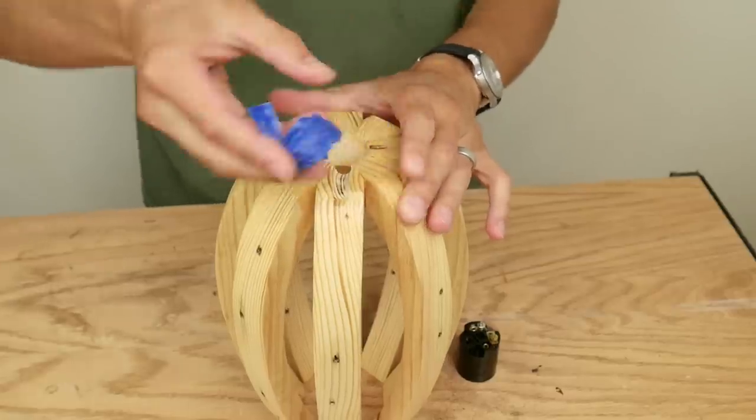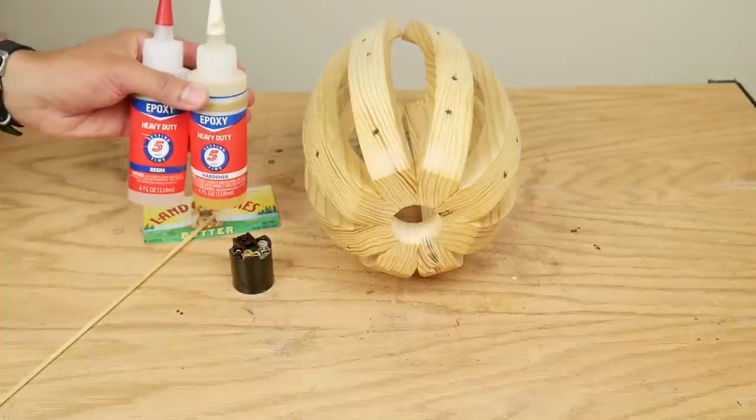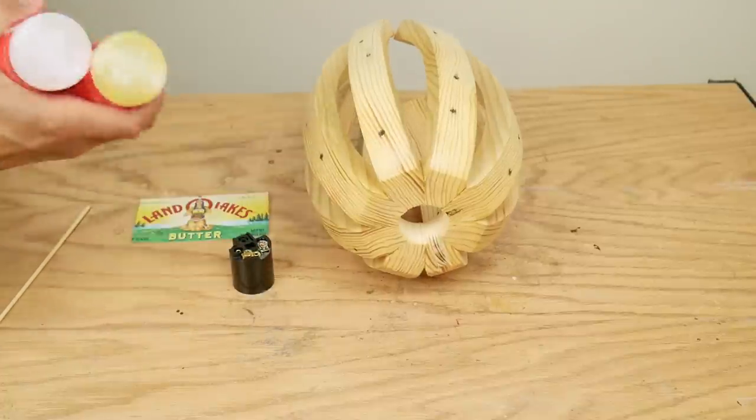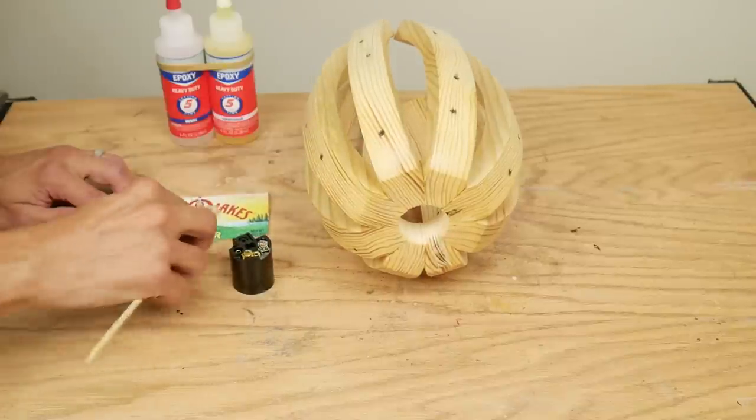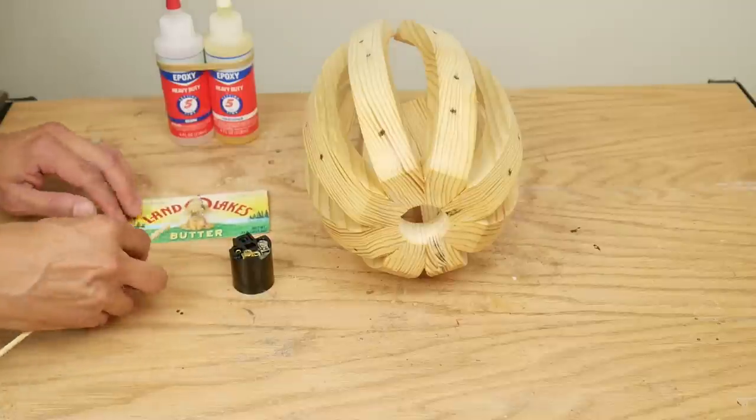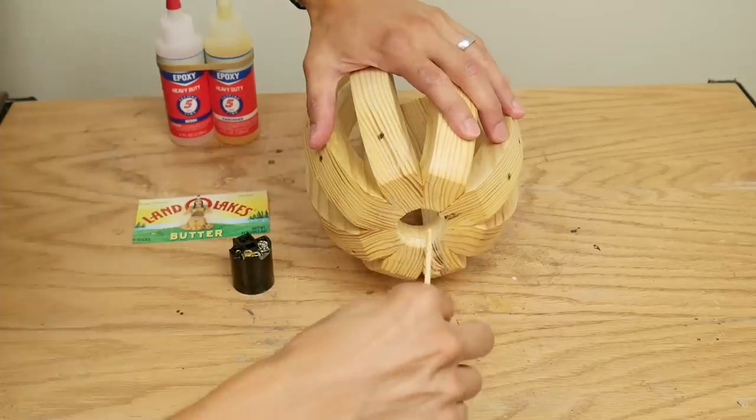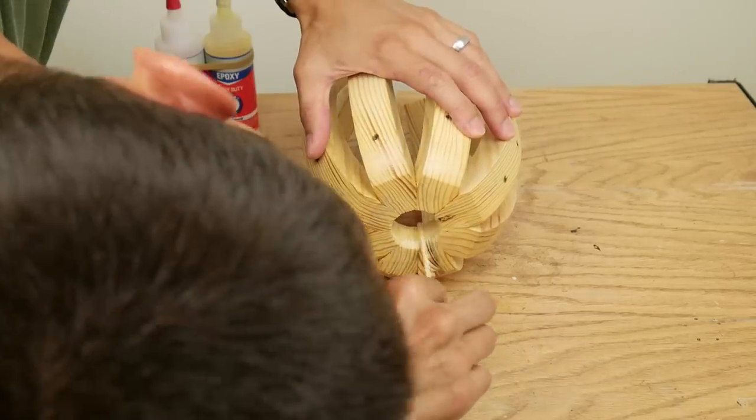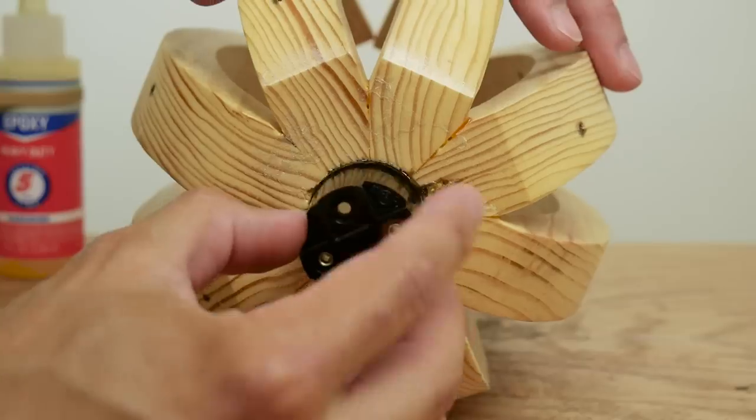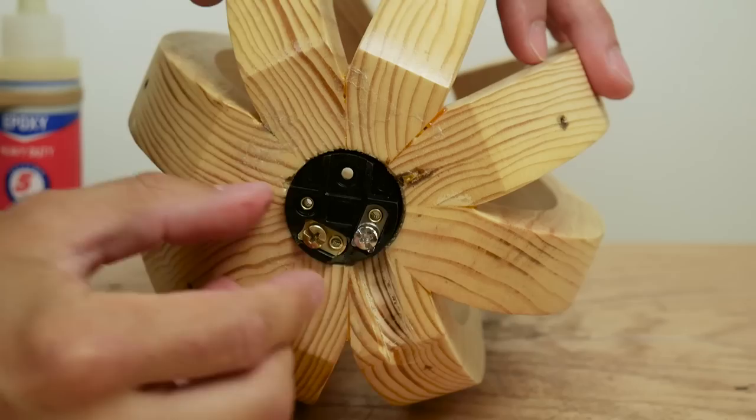I removed the tape from the lamp and used a two part quick setting epoxy to attach the socket to the hole in the lamp. It would have been cleaner if I had inserted the socket from the top rather than the bottom.